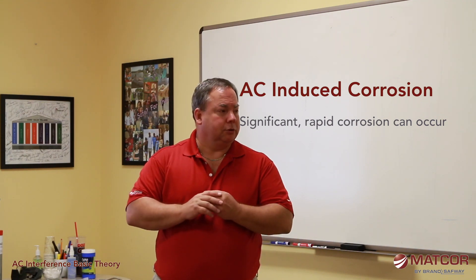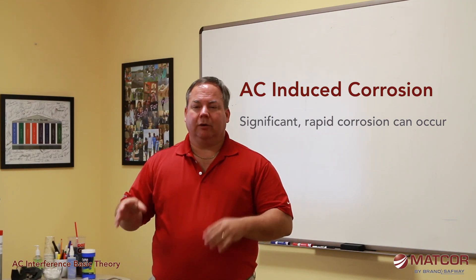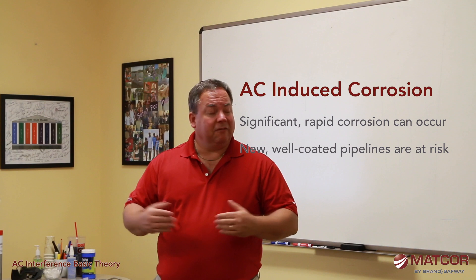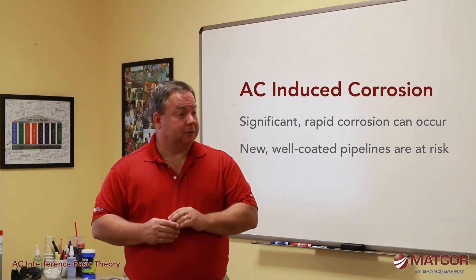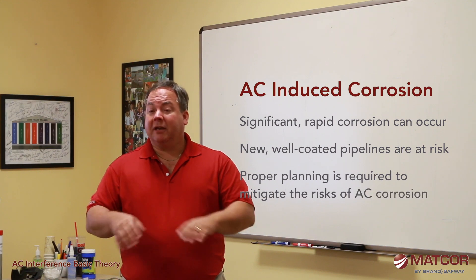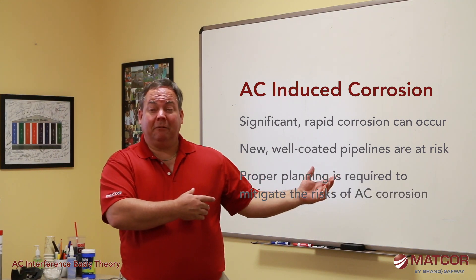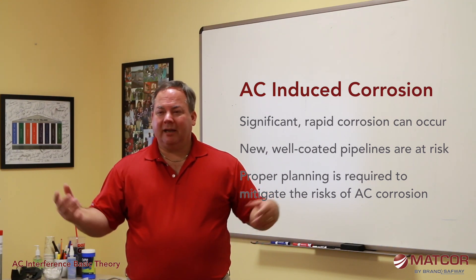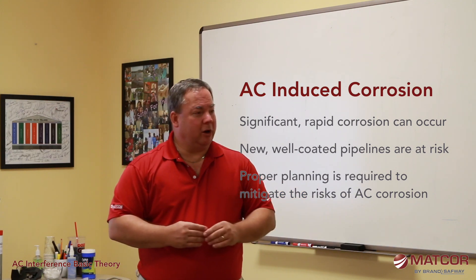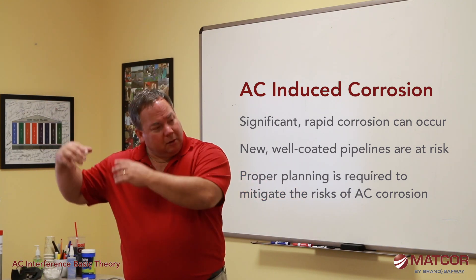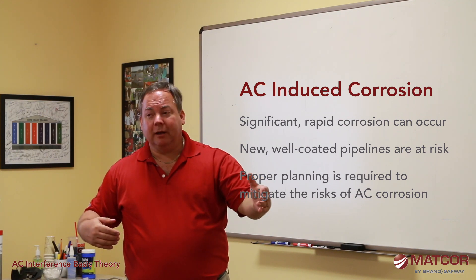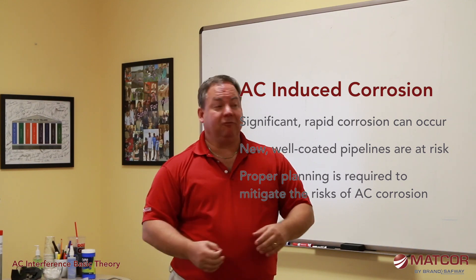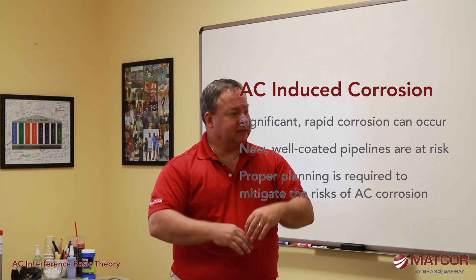You can get very significant, very rapid corrosion from AC induced corrosion. We've had operators with brand new pipelines that within the span of a year have seen significant enough corrosion that the integrity of the pipeline was at risk. The old coating systems had so many defects and natural grounding points that any AC picked up just naturally found its way off. Now the coating systems are so good that the AC has nowhere to go — it builds up, finds the one small defect, and that's where AC induced corrosion occurs.